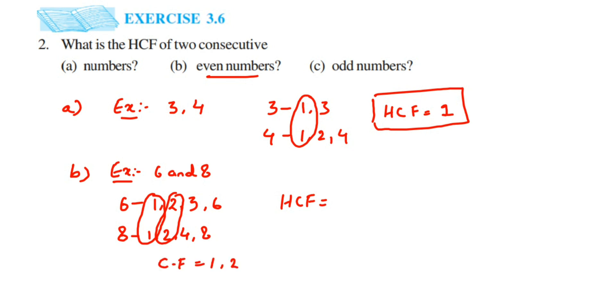From the common factors we got 1 and 2. Between 1 and 2, which one is the highest? It's 2. So HCF is 2. Not only for 6 and 8 — if you take any two consecutive even numbers, the HCF is always 2.